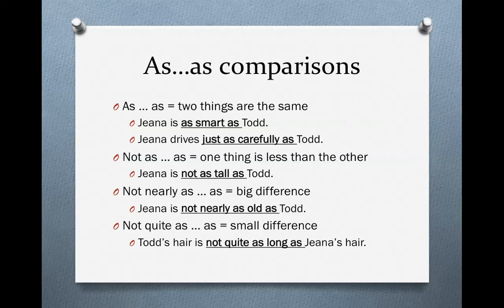Notice the part of speech that goes in between the two as-words. In the first sentence, 'as smart as,' we have an adjective. In the second sentence, 'as carefully as,' we have an adverb. So in between 'as' and 'as,' you put an adjective or an adverb.